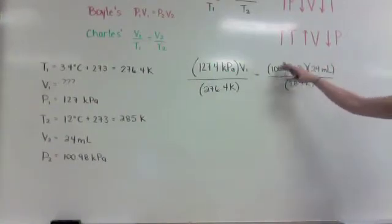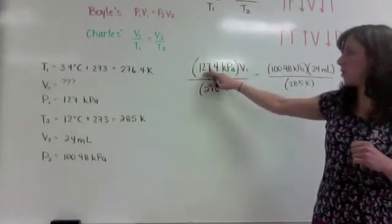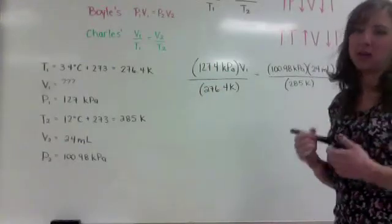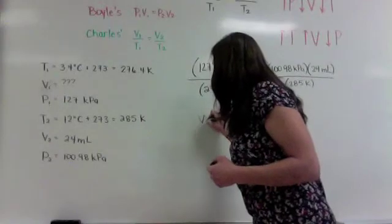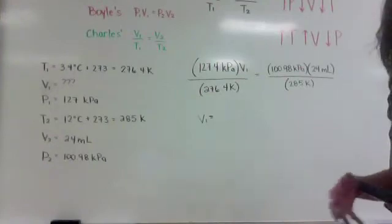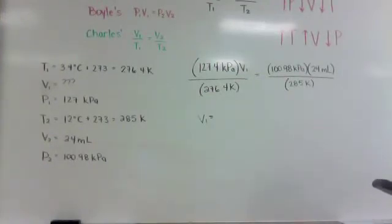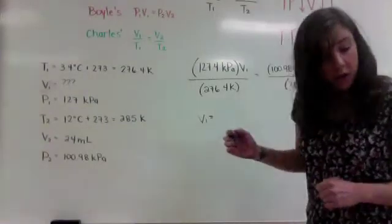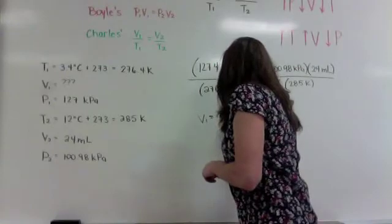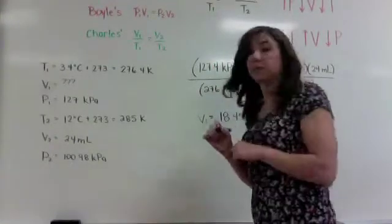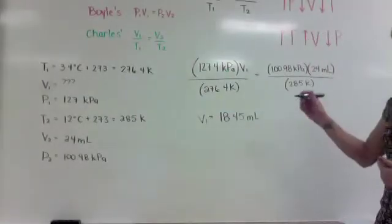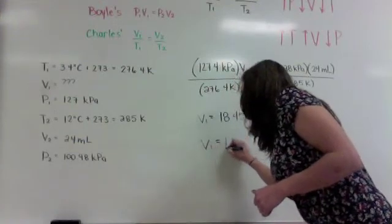We create the right-hand side as a whole number, multiply by 276.4, then divide by 127.4 kPa to isolate volume 1. When we plug it all in, we get a volume 1 of 18.45 milliliters. Applying sig figs — noting that 3.4 degrees Celsius has only 2 sig figs — we round 18.45 to 2 sig figs, giving us 18 milliliters for this bubble.